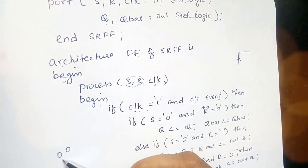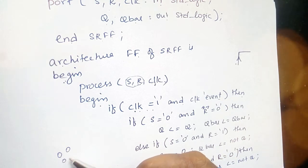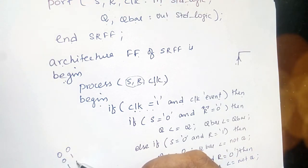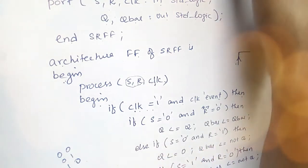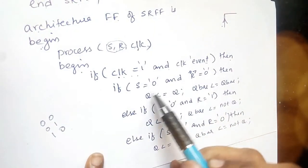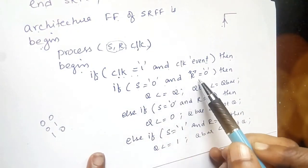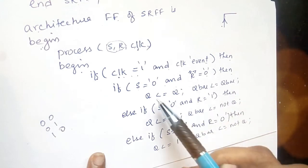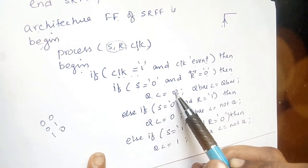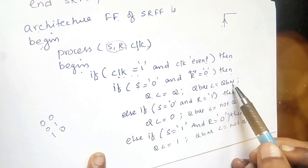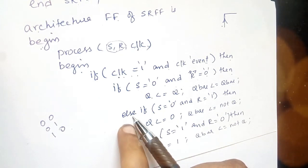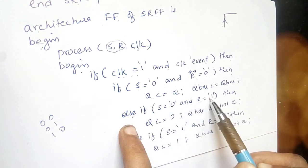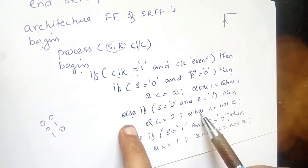Inside the clock edge condition we check all four combinations of S and R. If S equals 0 and R equals 0 then there is no change, so Q equals Q and Q bar equals Q bar. Else, if S equals 0 and R equals 1, then Q equals 0 and Q bar equals not Q.